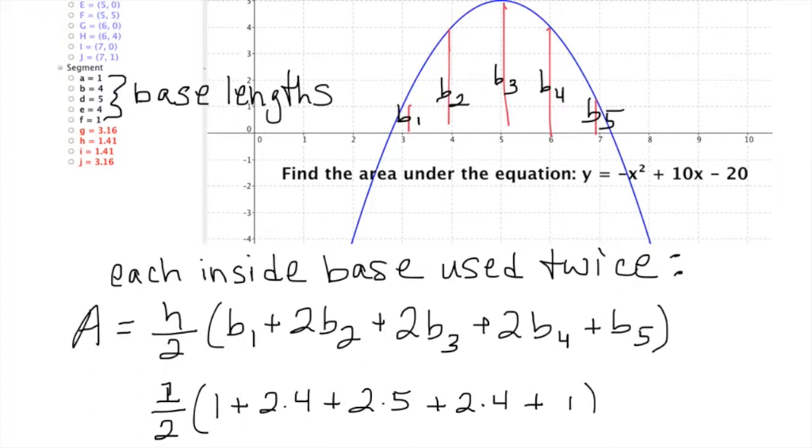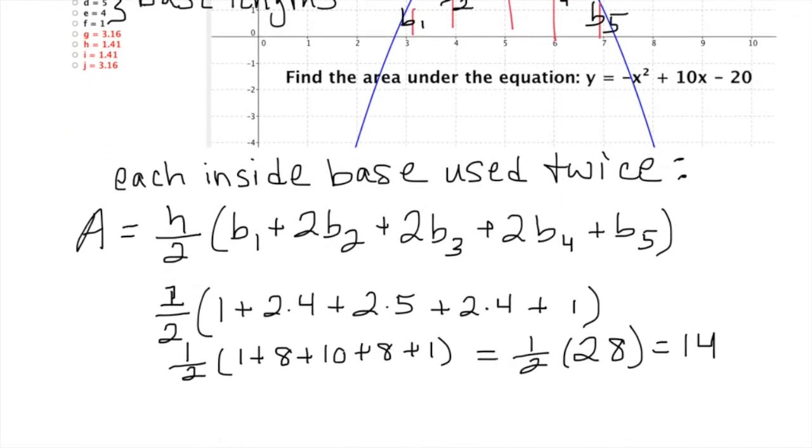Notice there's a somewhat symmetrical look to this because it is a quadratic equation and parabolas are symmetrical. So if we simplify that a little bit more, we've got our 1 half on the outside, and then inside the parentheses we have 1 plus 8 plus 10 plus another 8 plus another 1, and that's half of 28 or 14 is the approximate value that we get by just adding up those trapezoids underneath.